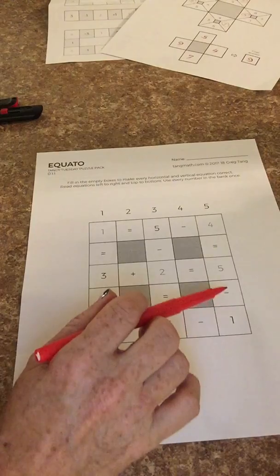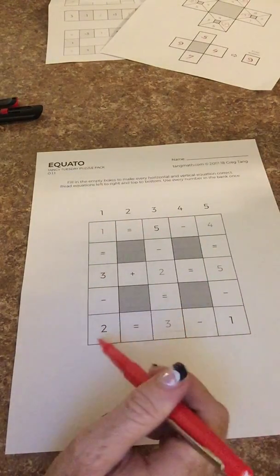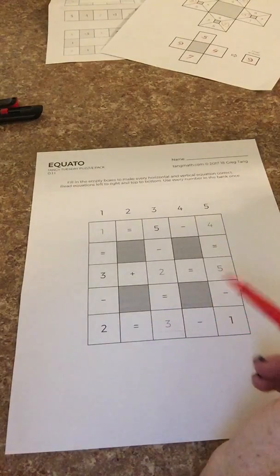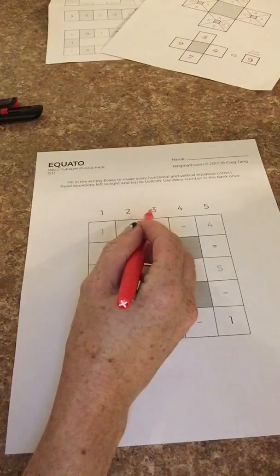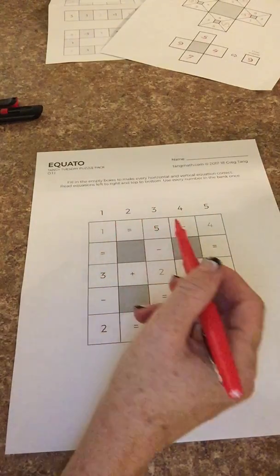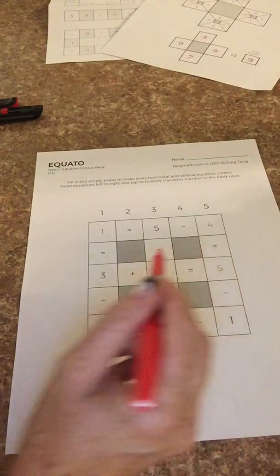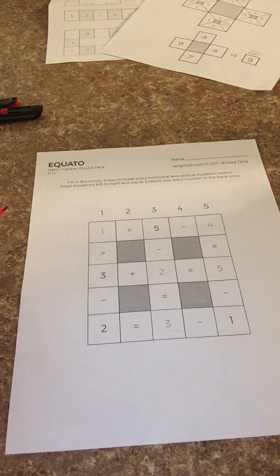It says read equations left to right and top to bottom. So we try not to let the kids do one minus something is four or we don't really read in that direction. So we read these directions and they give you the answers here and use this is called the bank and use each number once.